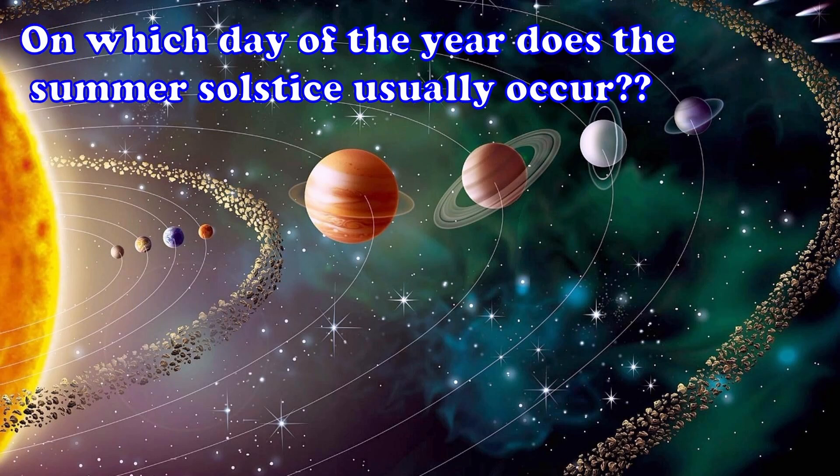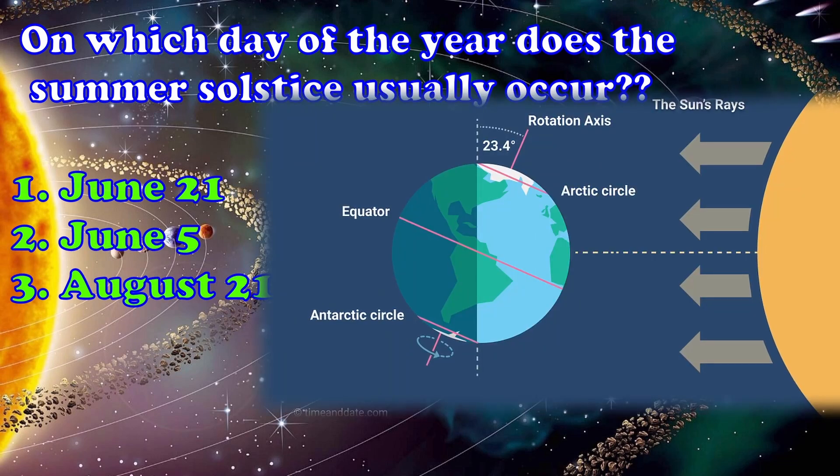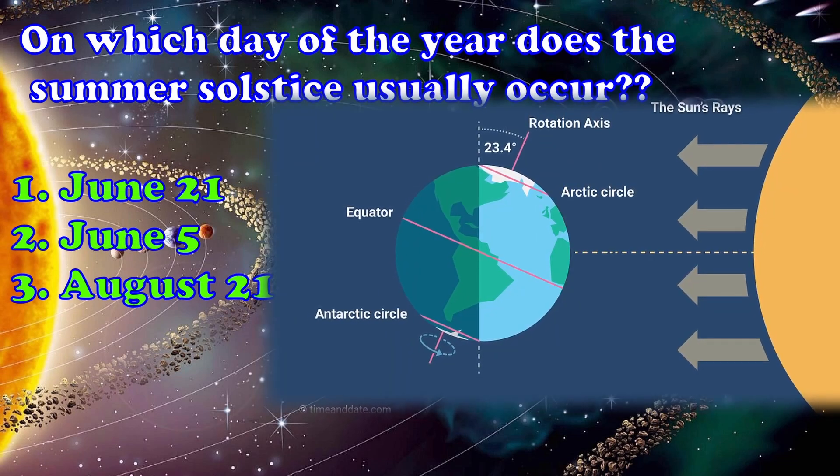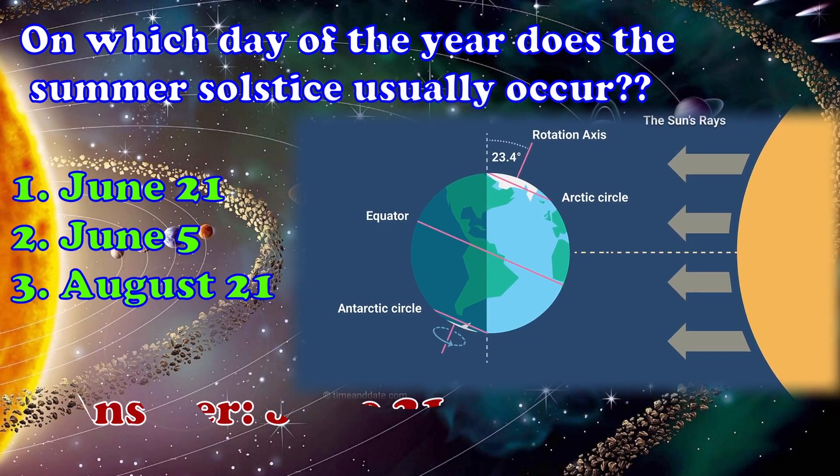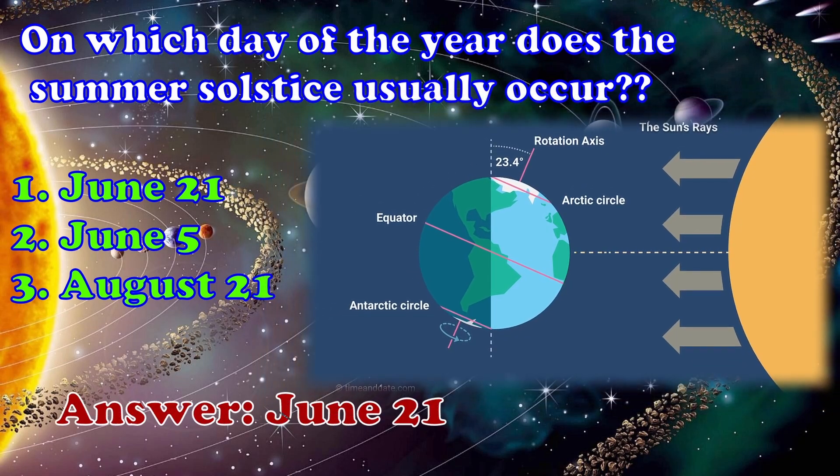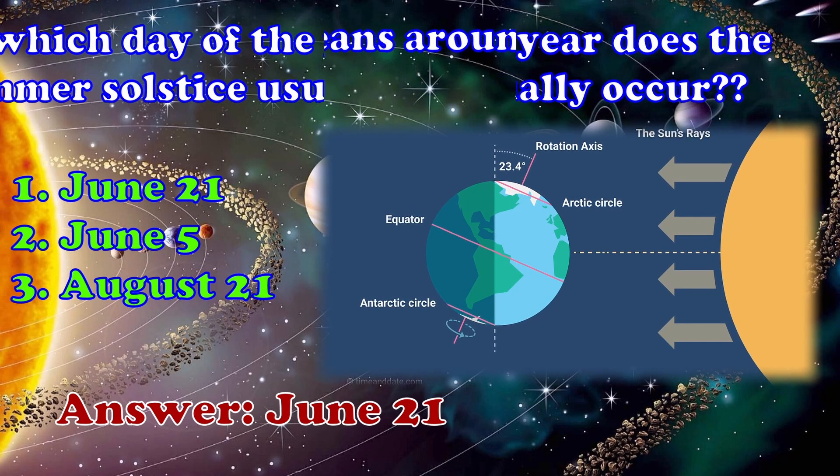On which day of the year does the summer solstice usually occur? 1. June 21st 2. June 5th 3. August 21st. Answer, June 21st.